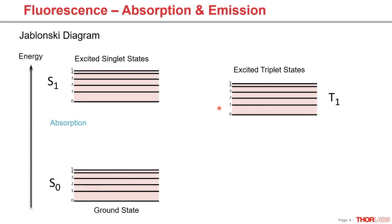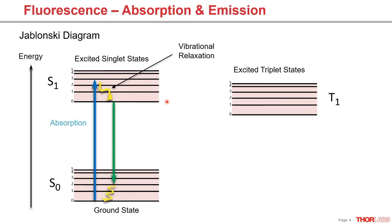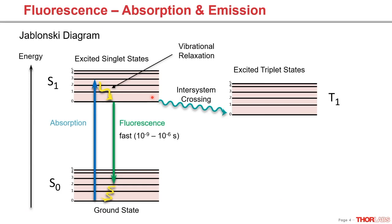A fluorescence process starts with the substance seeing light in the form of energy. An electron absorbs that photon of light and jumps up to a higher excited singlet state. It then follows a process called vibrational relaxation and goes down to the lowest state in the excited state — you can imagine this as heat dissipation. The tendency for all electrons to return to their lowest energy state causes them to jump back down to the ground state by emitting what we call a fluorescence photon, on a timescale of around nine nanoseconds to microseconds.